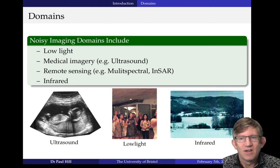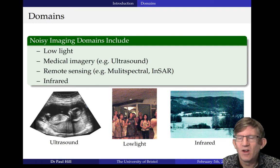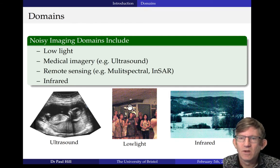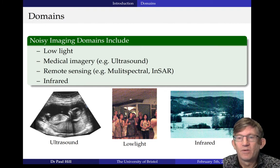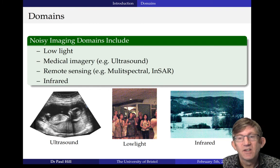Let's talk about some domains of denoising. Here are three or four different domains that all have inherent noise. You're familiar with what ultrasounds look like — they are absolutely covered in noise, and if you could get rid of that it would be of great benefit to any medical diagnosis. Then low light: when you turn the ISO up on a camera and turn the light down, you get a lot of grainy noise. And then domains such as infrared imagery also have a lot of noise. There are hundreds of examples — noise is a very limiting factor to a lot of imagery.